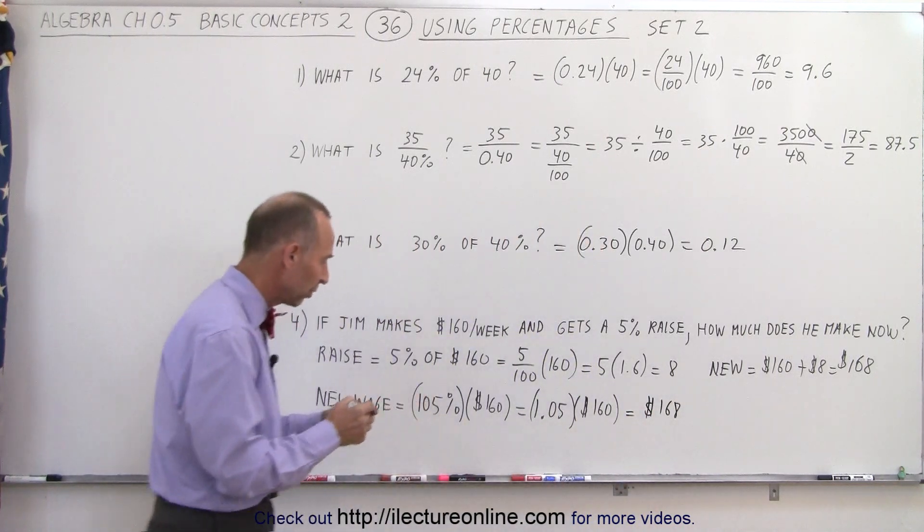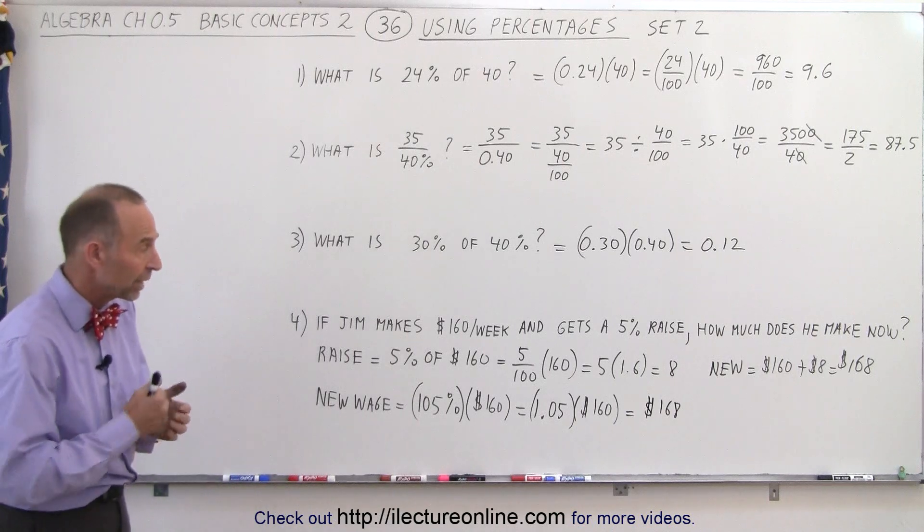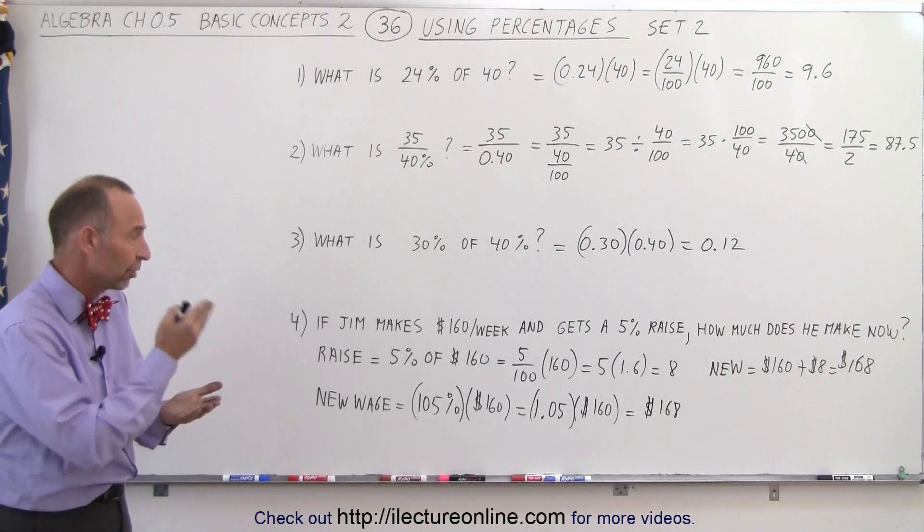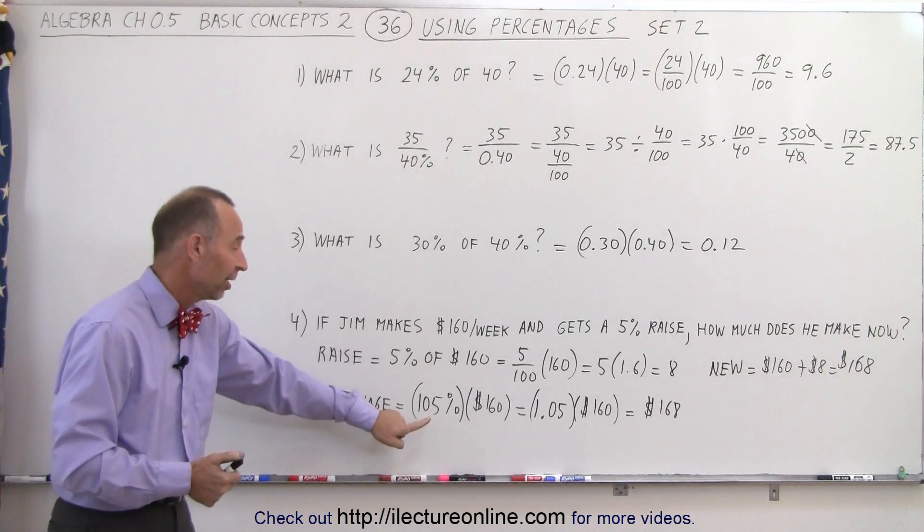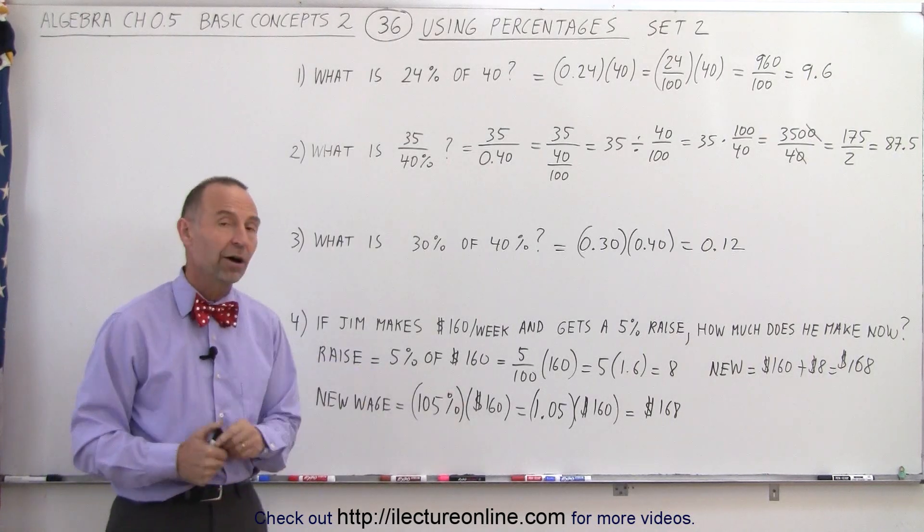And so there's two ways in which we can tackle that problem. We can either calculate the raise and add it to the original, or simply say the total will be 105%, 100 plus 5% of the original amount.